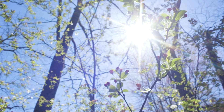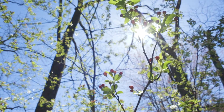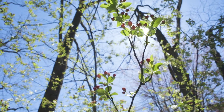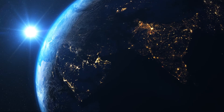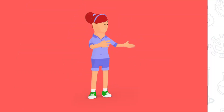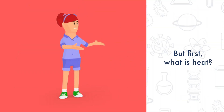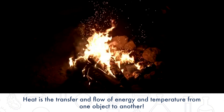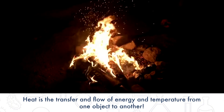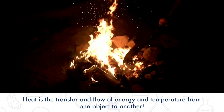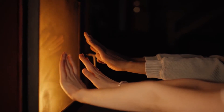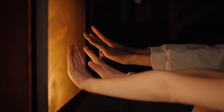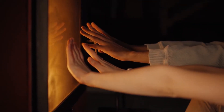Today, we're going to learn about how heat and how the sun's energy makes temperatures rise all the way here on Earth. First, let's understand the definition of heat. Heat is a transfer and flow of energy and temperature from one object to another. Heat flows from hot objects to cool objects through the transfer of molecules.